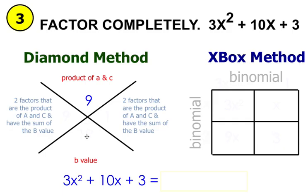At the bottom of the x, you're going to write your b value. The b value is the number or the coefficient in front of x. That would be ten.